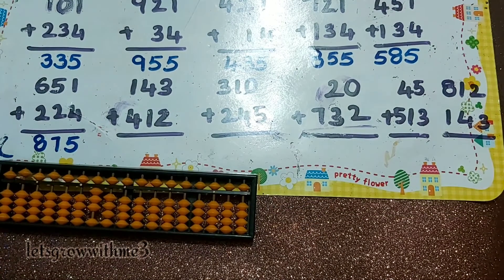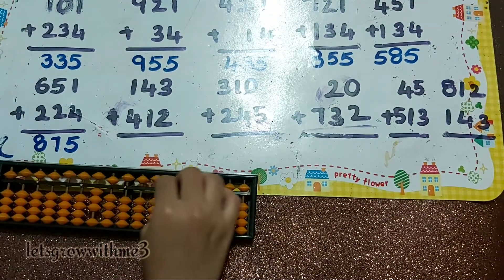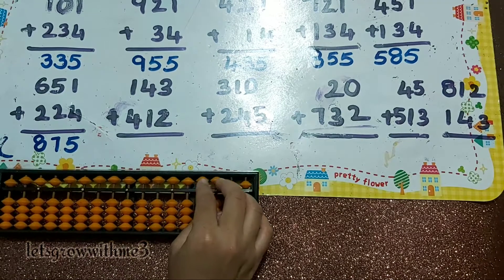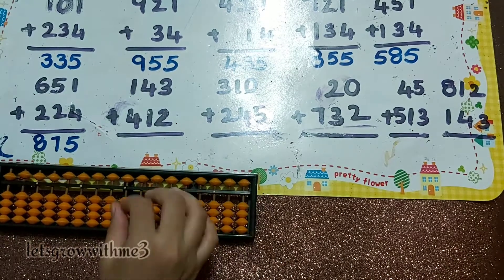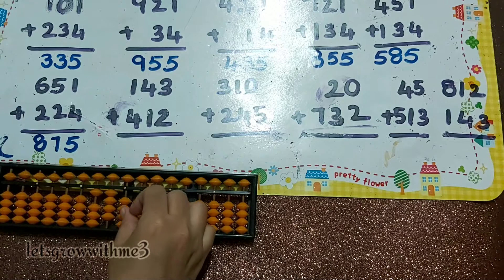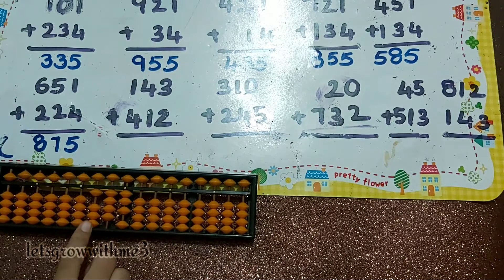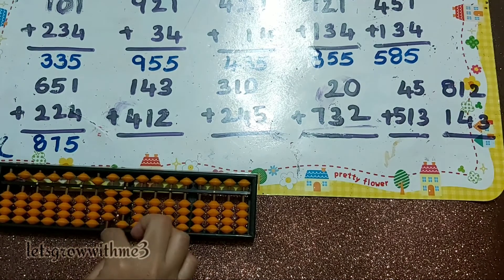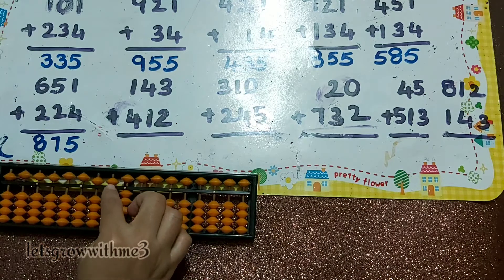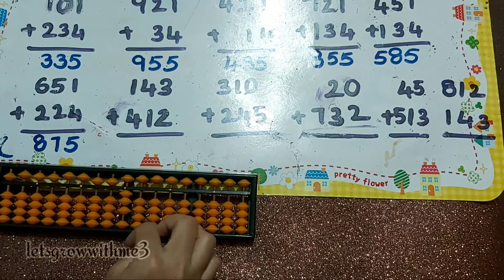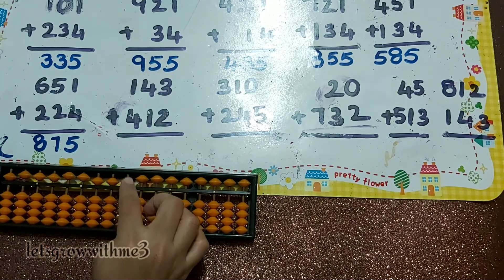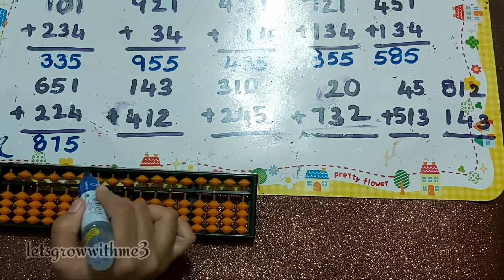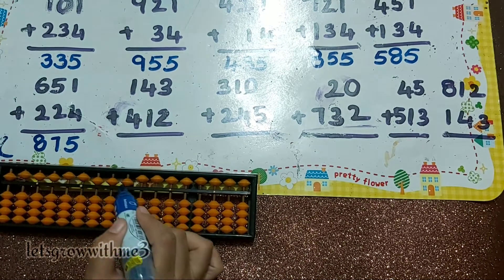Next one: 143 plus 400. How to add plus 4 — plus 5 minus 1. How to add 1 here — plus 5 minus 4. How to add 2 here — plus 5 minus 3. So the answer is 543.